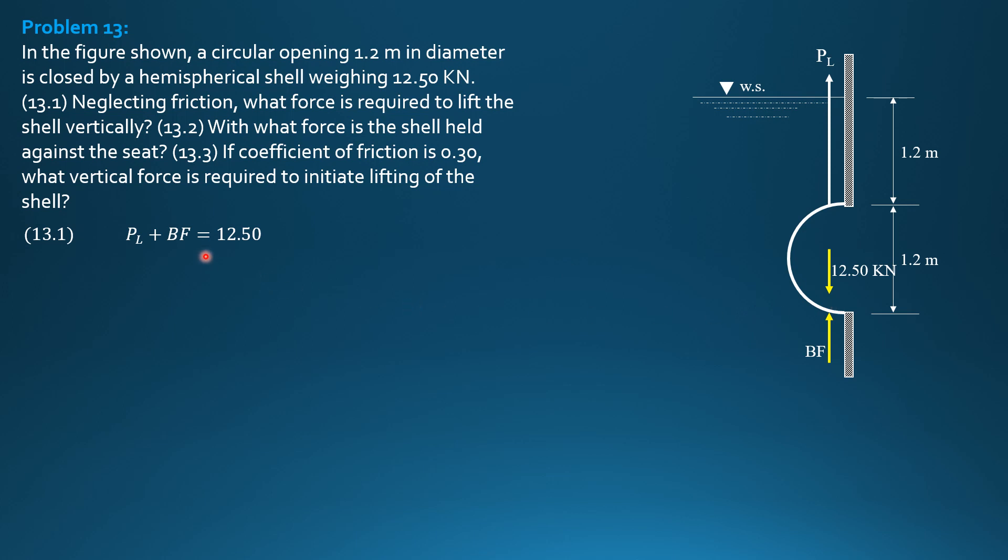plus BF equals 12.5. So, P sub L plus 9.81 times quantity 2 thirds pi 0.6 cube equals 12.5. So, P sub L can now be computed. That's the vertical force to lift the shell.